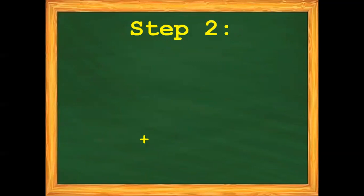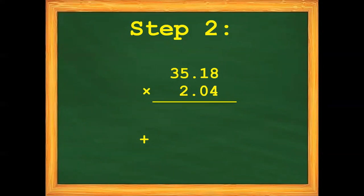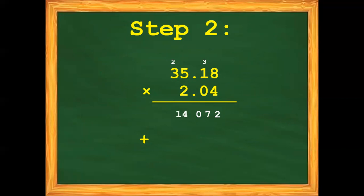Let us start. 4 times 8 is 32. Bring down 2, carry 3. 4 times 1 plus 3 is 7. 4 times 5 is 20, bring down 0, carry 2. 4 times 3 is 12 plus 2 is 14.